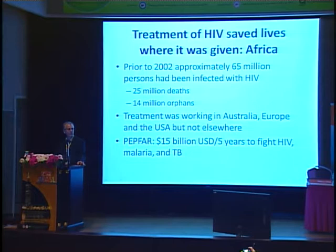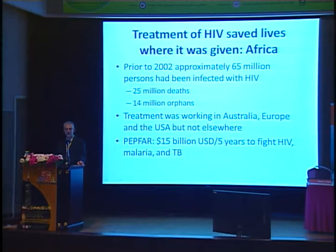Prior to 2002, there had been approximately 65 million persons infected with HIV around the world, already 25 million deaths and 14 million orphans because of the devastating effects of HIV. Notice that the treatments were effective — they were working in Europe, in the United States, in Australia — but they weren't working where most of the infections were. And something had to change in order for that to change.